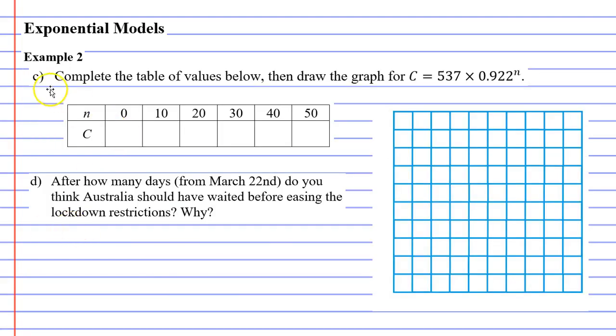We'll now move on to question C. It says, complete the table of values below, then draw the graph for C equals 537 times 0.922 to the power of N. So we need to go one row at a time.